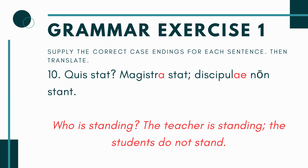This grammar exercise pulls together what we covered in Chapter 1: particularly the difference between -a and -ae for singular and plural nouns and adjectives, and the verb endings -t and -nt for singular and plural verbs. If you pull that all together you should be able to figure this out. If you have any questions, put them in the comments below. Otherwise, use these grammar exercises as a way to practice and make sure you're on the right track — good luck!